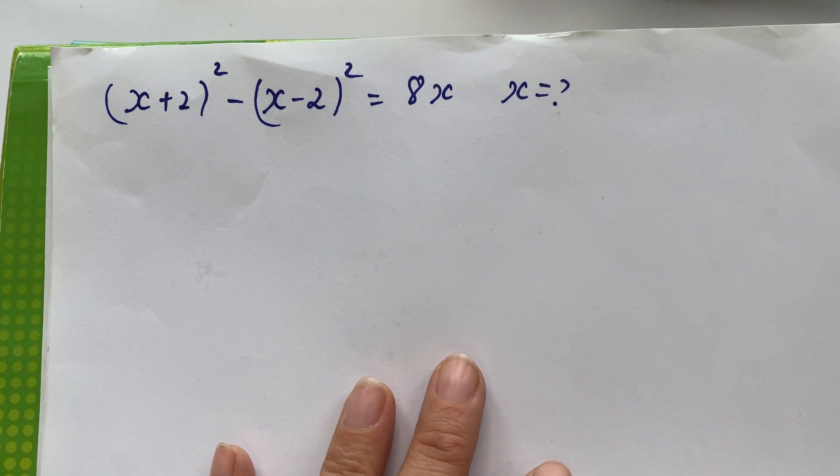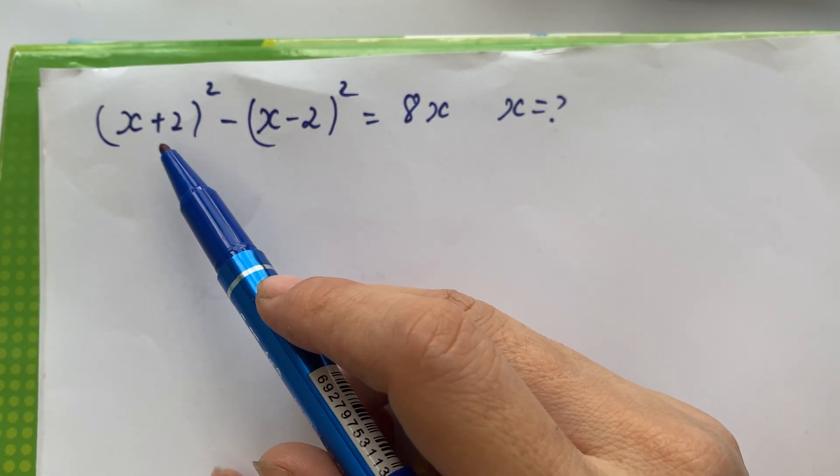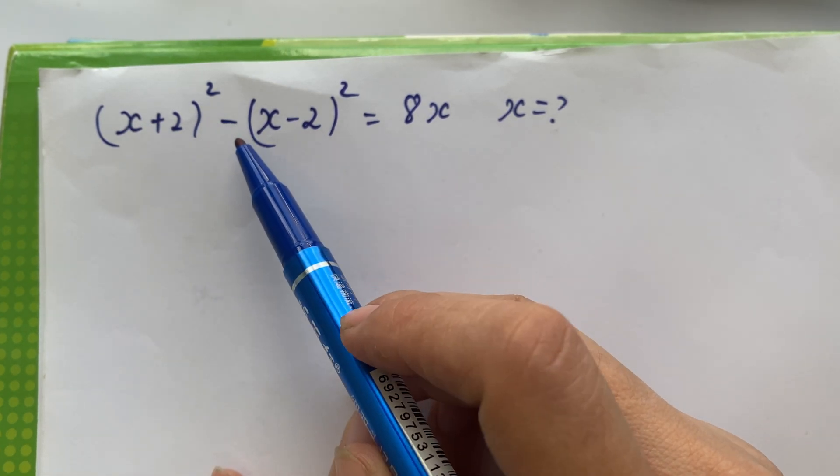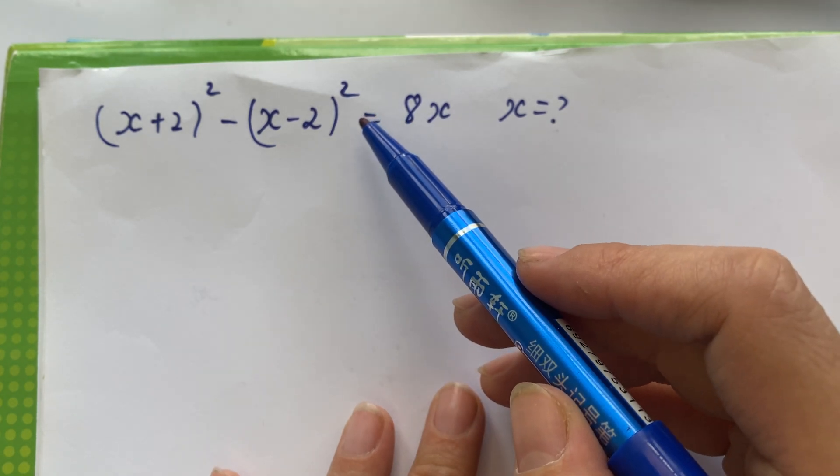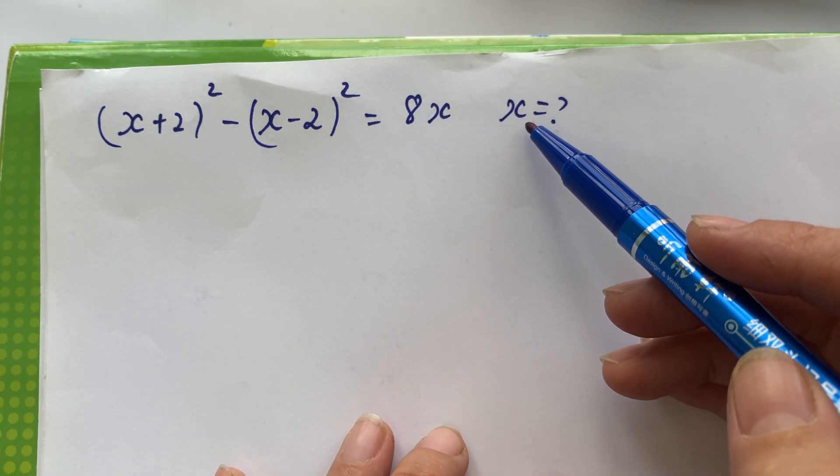Hello everyone! How to solve (x+2)² minus (x-2)² equals 8x?